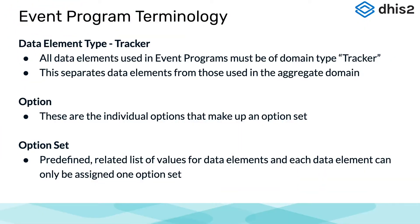When we are using the event data model, we need to make sure we are aware of the two main differences in the data elements compared to the aggregate data model: their domain type, and how disaggregations are assigned to them. Note that we are only focusing on event programs in this course. However, both event and tracker programs follow these principles and terminology described.